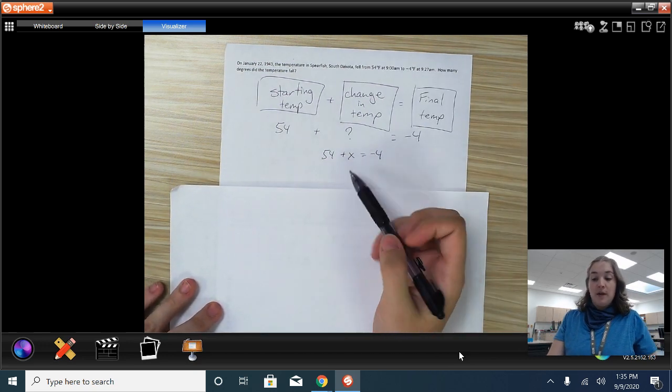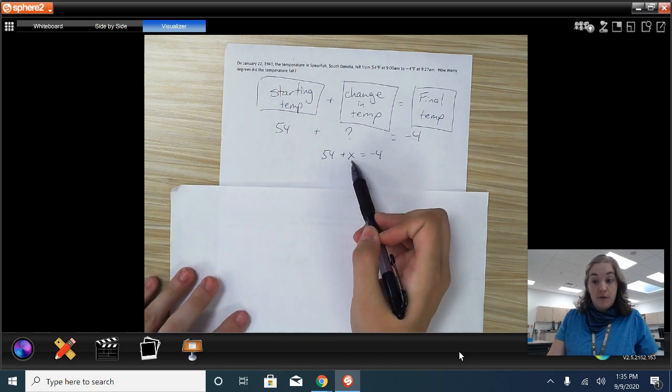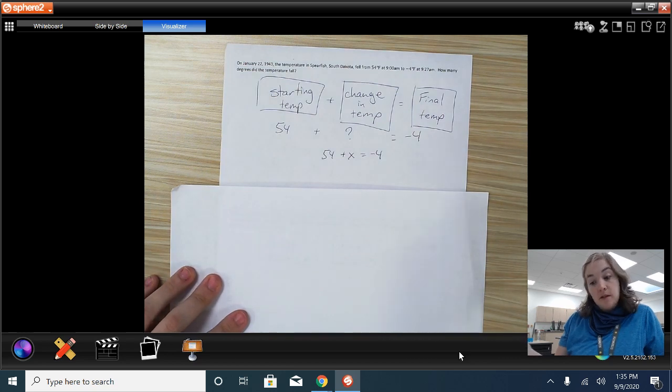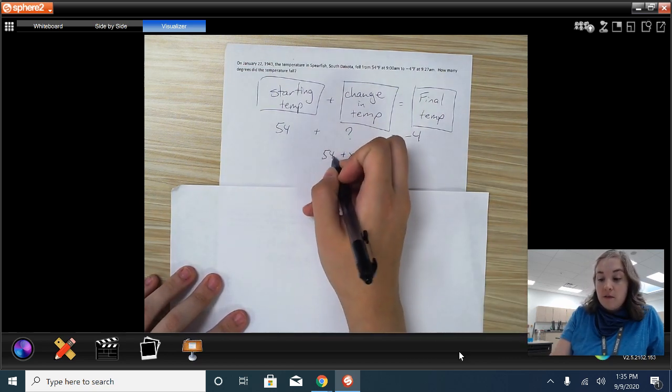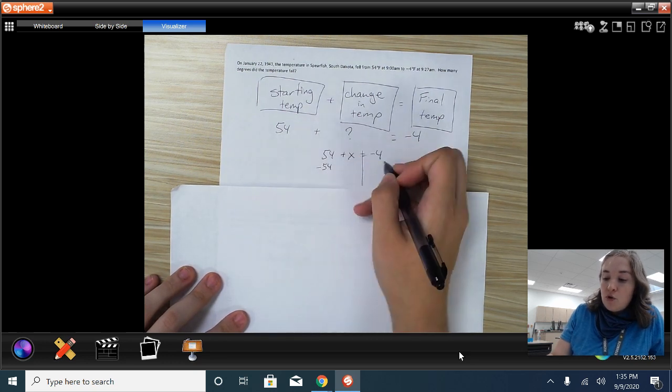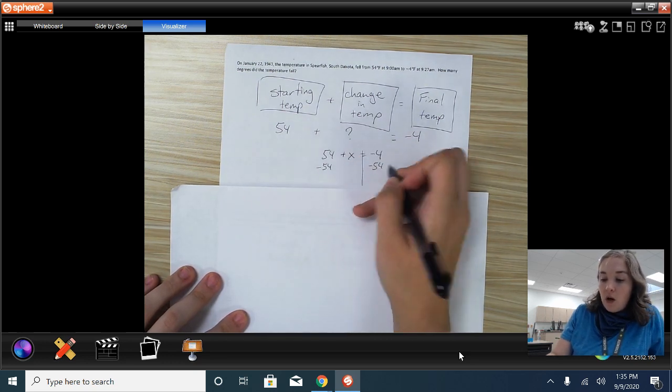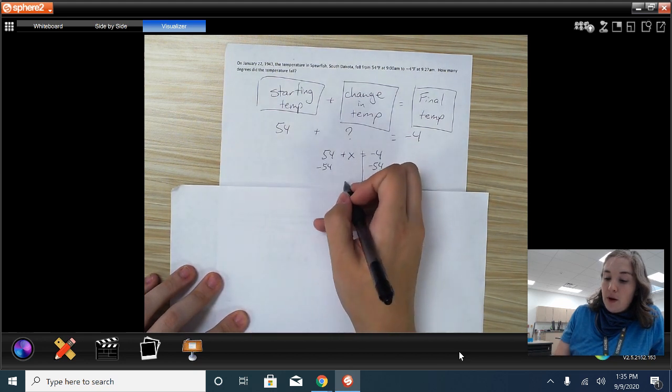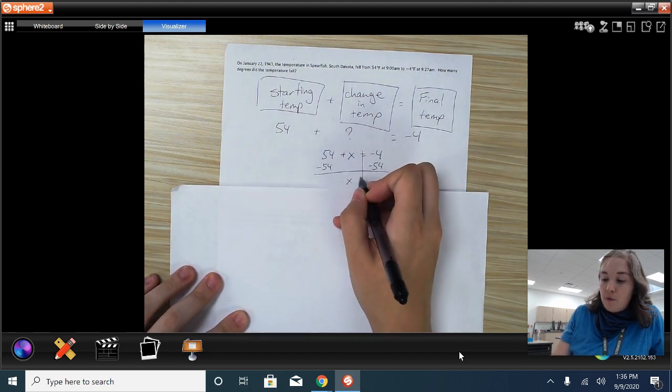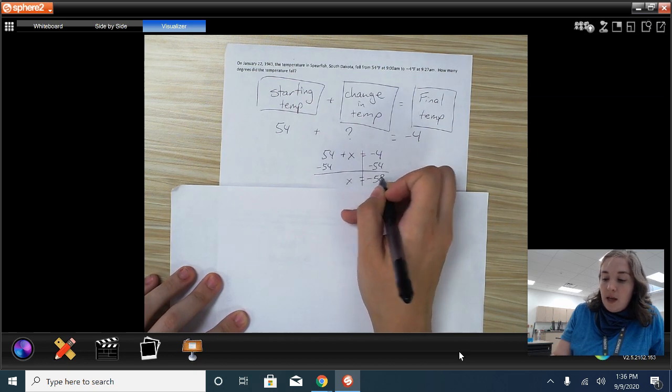I want to figure out my change in temperature. I want to get X by itself. I have a 54 here, but what kind of a 54 is it? It should be a positive, right? If there's nothing written here, then it's a positive. The opposite of a positive is a negative. So I need to subtract 54 on both sides. So I end up with an X. Negative 4 minus 54 is equal to negative 58.